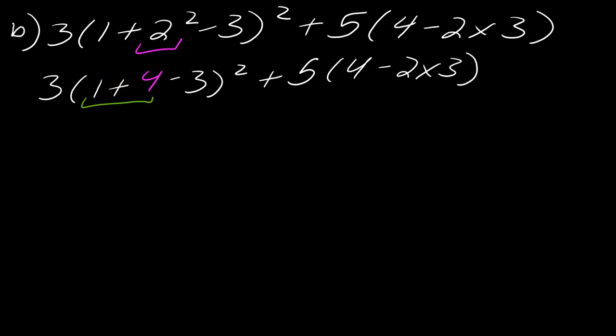The next thing I've got to do is my addition and subtraction from left to right inside this set of parentheses. So the 1 plus 4, that is just going to equal 5, and I haven't touched this other set of parentheses yet. And then the 5 minus the 3, this is 2 squared.